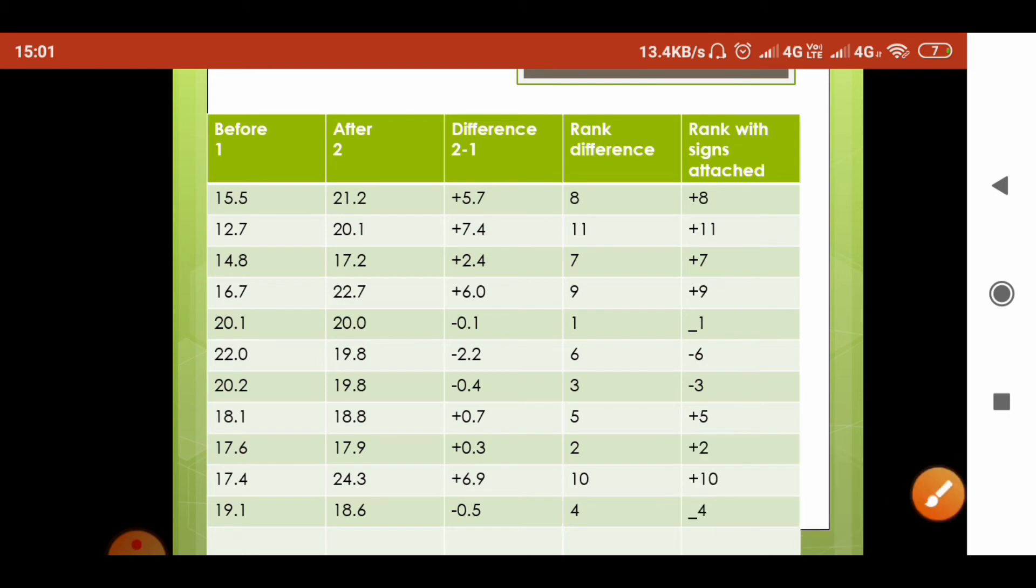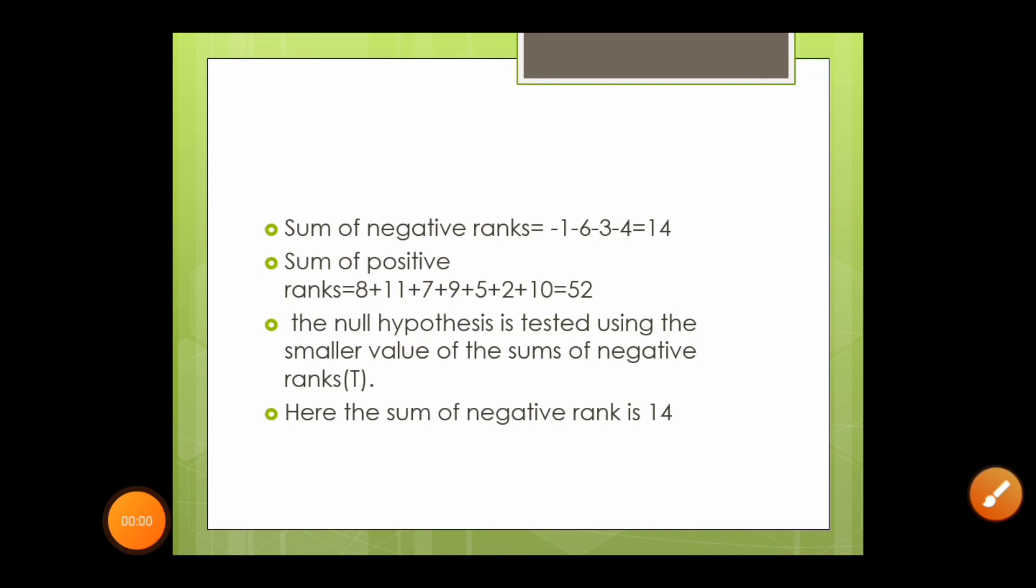Then we find out the sum of the positive ranks and negative ranks. Here the sum of negative ranks is 14, and the sum of positive ranks is 52. For Wilcoxon's signed rank test, the null hypothesis is tested using the smaller value. Here, the sum of negative ranks is 14.